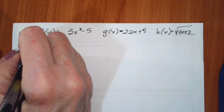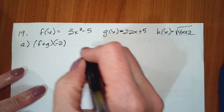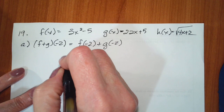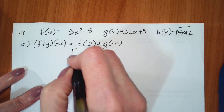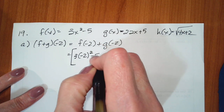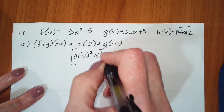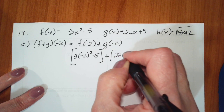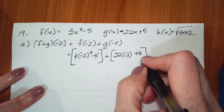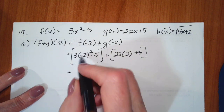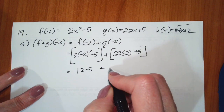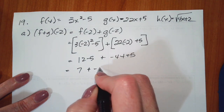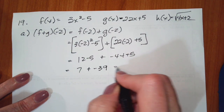Part a wants us to find f plus g of negative 2. Remember what this means — this means f of negative 2 plus g of negative 2. So f of negative 2 is going to be 3 times negative 2 squared minus 5, and g of negative 2 is going to be 22 times negative 2 plus 5. This becomes 12 minus 5 plus negative 44 plus 5. 12 minus 5 is 7, plus negative 39 gives me negative 32.